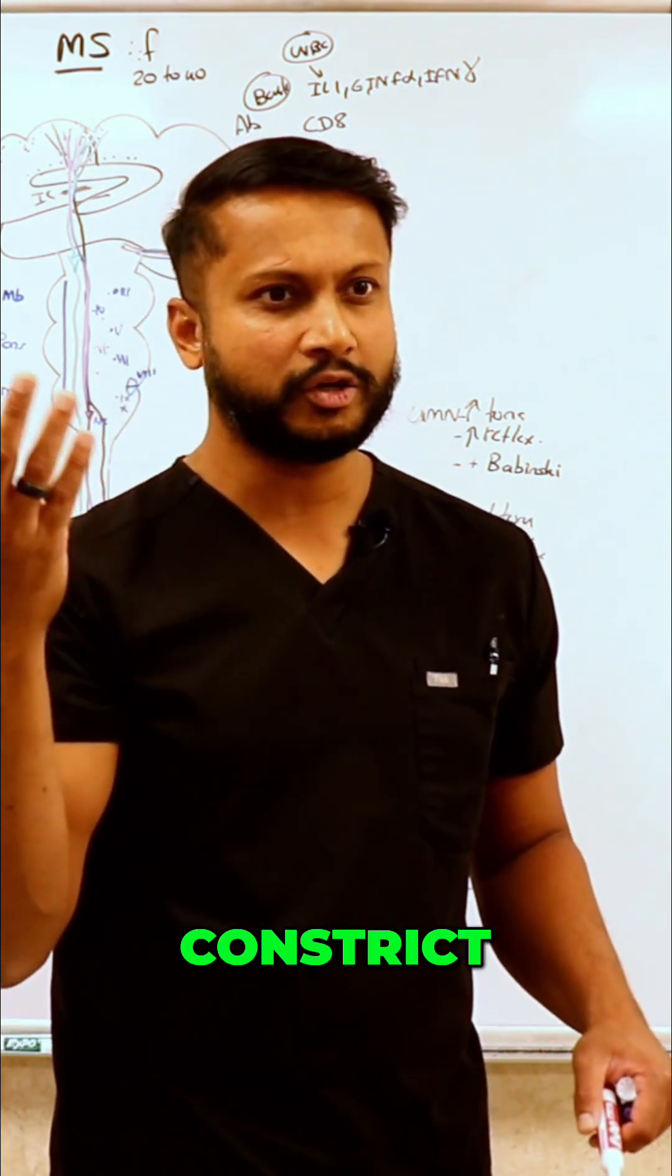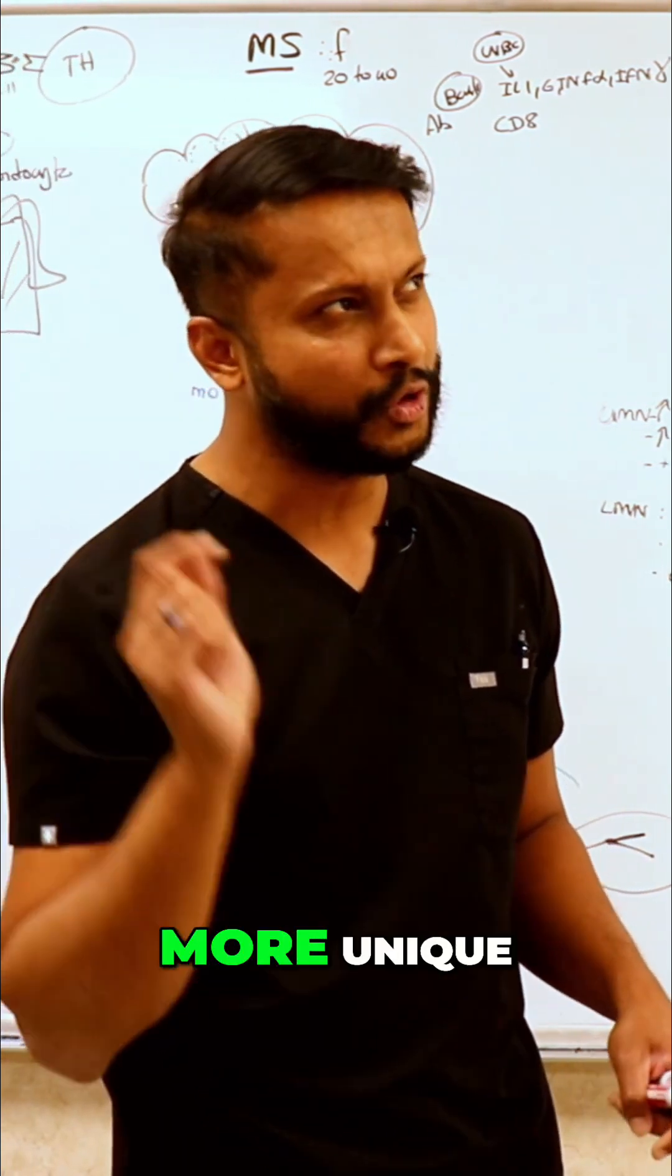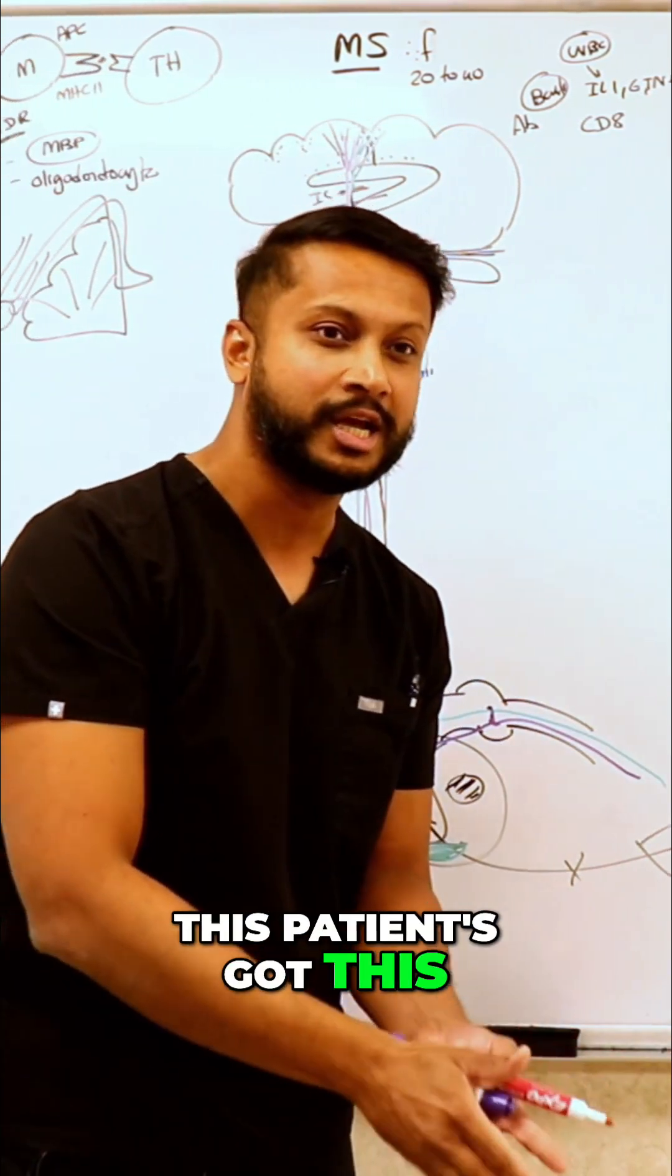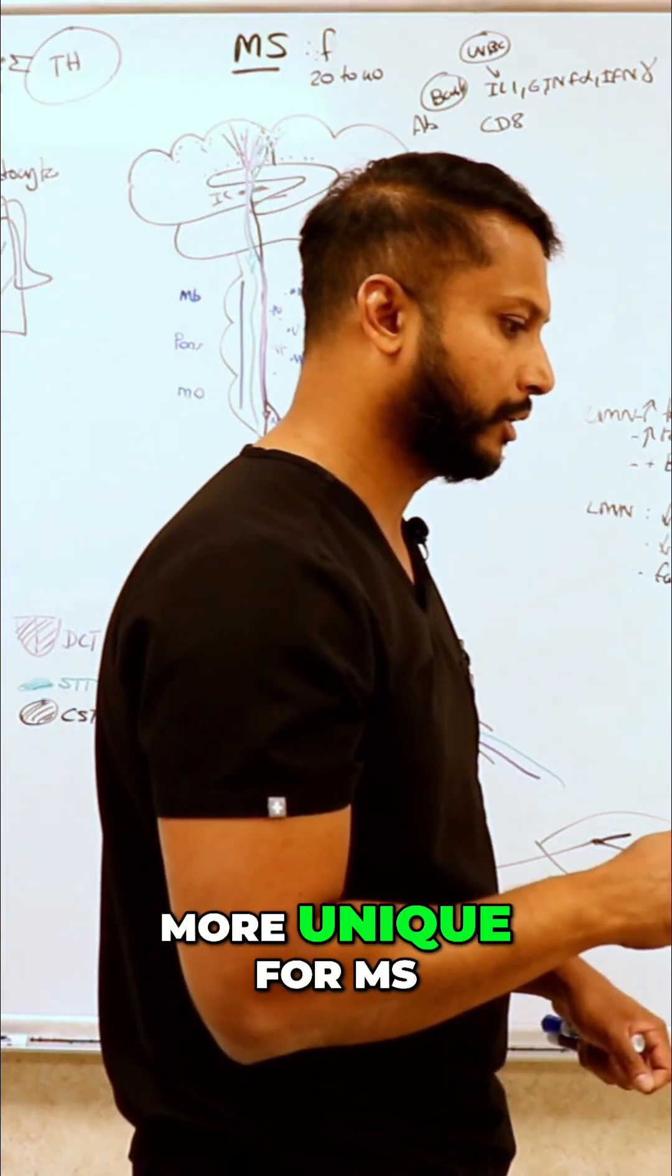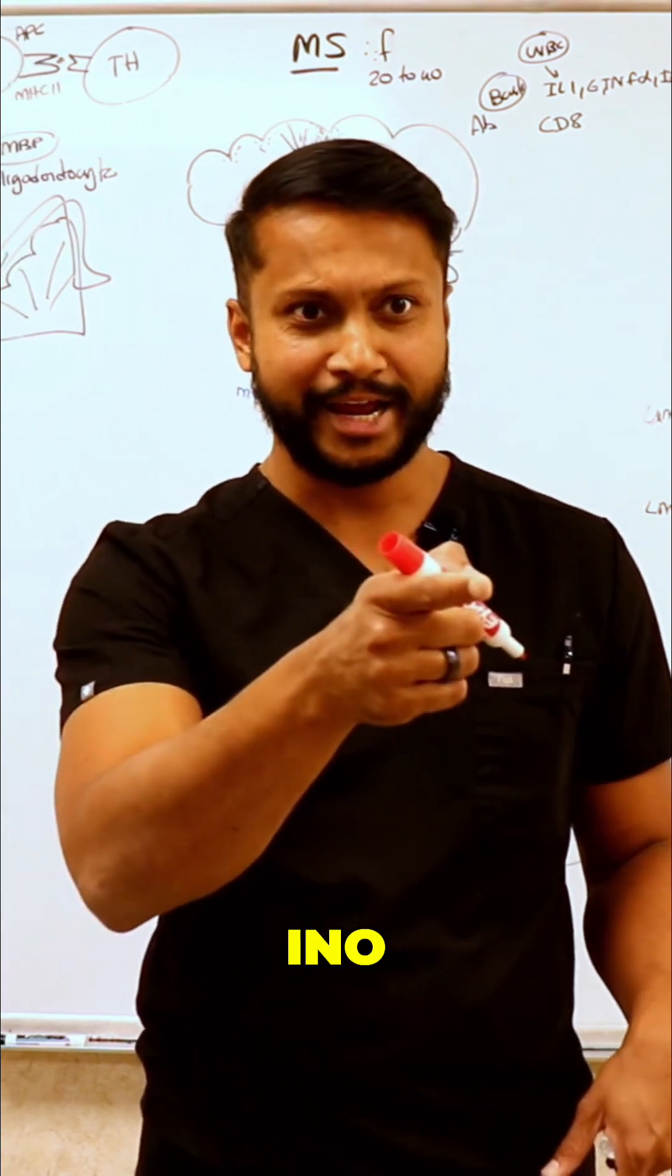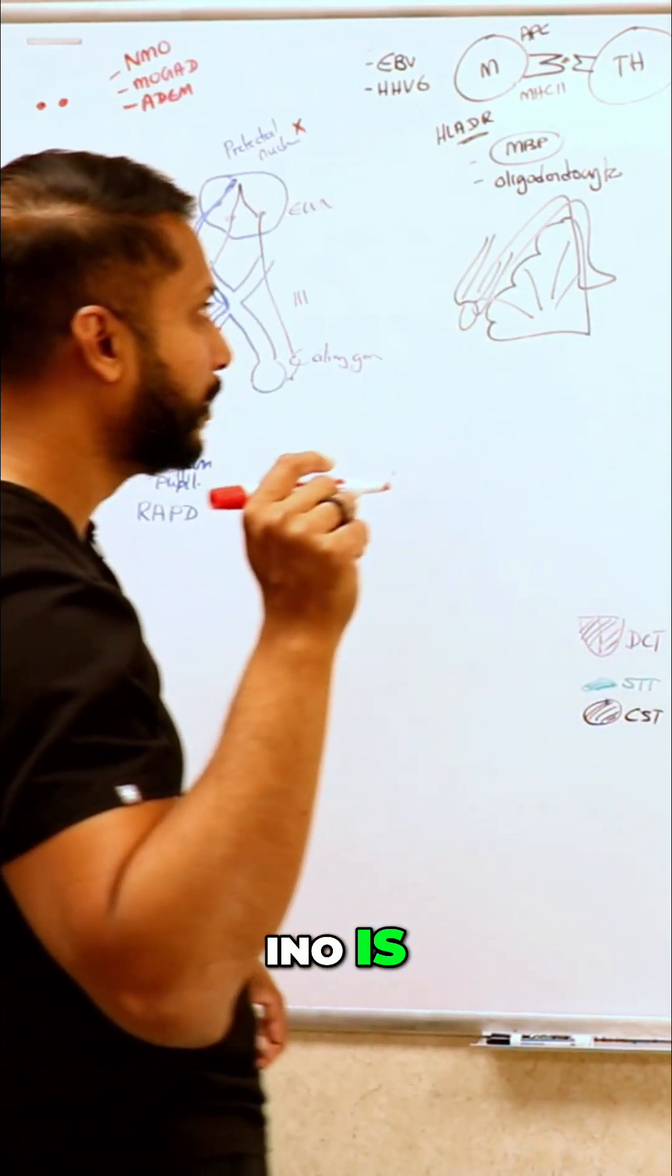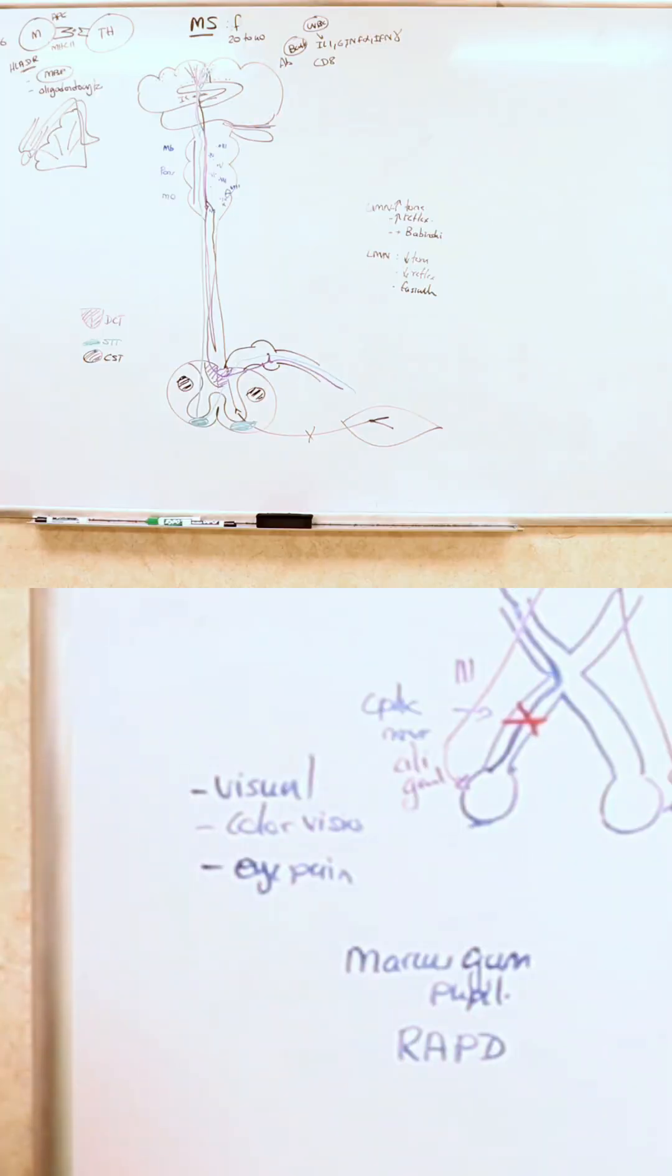Something more important, more interesting, more unique—so much so that if these patients got this, it is MS unless proven otherwise. What is much more unique for MS? INO is very, very unique to MS. INO is known as intranuclear ophthalmoplegia.